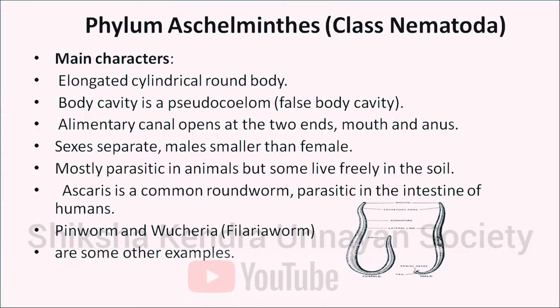The next phylum is phylum Aschelminthes, belonging to class Nematoda. It has a false coelom (pseudocoelom); notochord is absent, so it is non-chordate. Examples: roundworms and threadworms. They have an elongated cylindrical body; the body cavity is a pseudocoelom. The alimentary canal opens at both ends — they have a mouth and anus. Sexes are separate; males are smaller than females. They are mostly parasitic but some live freely in soil. Ascaris is a common roundworm found in the human intestine. Pinworm and Wuchereria (filaria worm) are other examples.